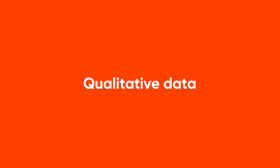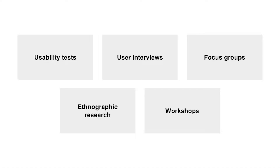Qualitative research is primarily exploratory research. It is used to gain an understanding of underlying reasons, opinions, and motivations for our users, and helps us validate our quantitative research. There are hundreds of different techniques, but the most common ones include usability testing, user interviews, focus groups, ethnographic studies, and workshops.